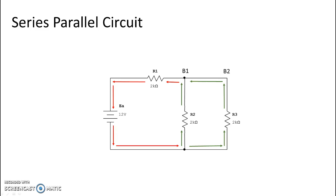Here we are again back in our series-parallel circuit series. Last time we looked at faults for shorts in the series portion of our series-parallel, and this time we are going to look at a short in the parallel portion of our series-parallel. On the screen you will see a line appearing for an alternate path of current around R3.